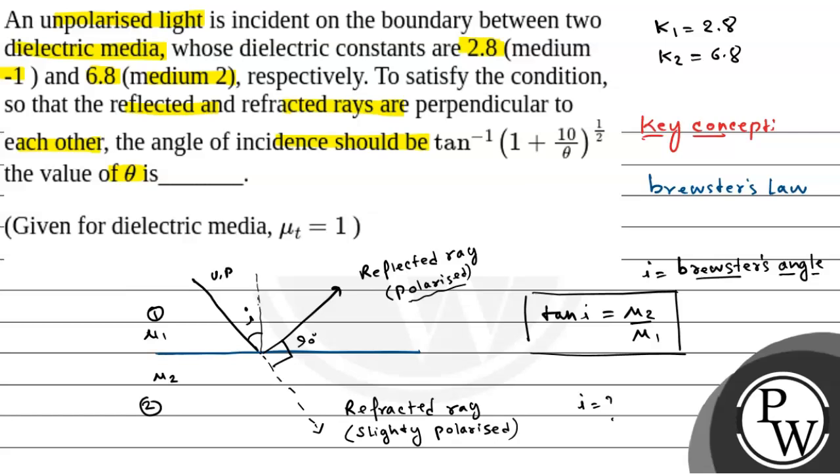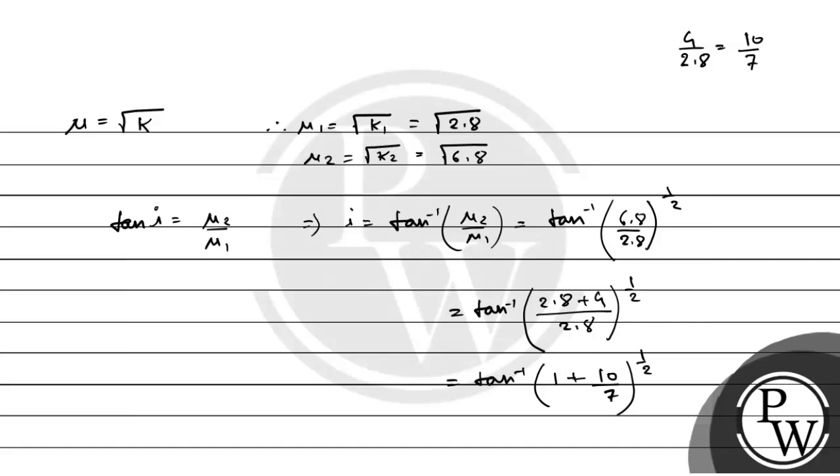Now the question has given that i equals tan inverse 1 plus 10 by theta to the power half. So comparing this...